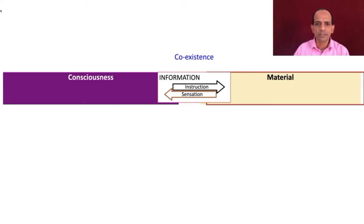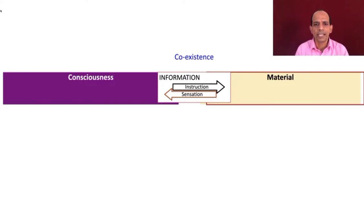How is this exchange of information taking place? I am sending information to the body and receiving sensation from the body. The self is sending information in the form of instructions to the body and receiving information in the form of sensation from the body. When I am talking to you, I am deciding what to say, sending that instruction to the body, and I am looking at the slide and getting information to share with you, utilizing the body in the process. So I am getting the view of the slides through my eyes, through sensation, it reaches me, and then I decide what to say. This is how the exchange of information keeps on taking place between me and the body.